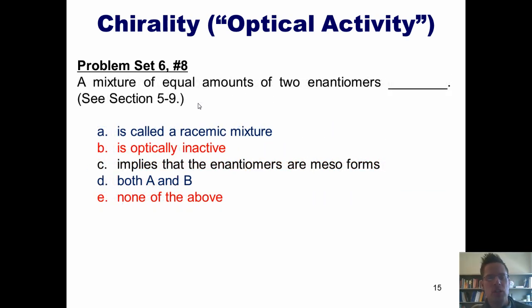Here's another one. A mixture of equal amounts of two enantiomers is what? A, it says, is called a racemic mixture. Is that true? Well, as we discussed earlier, the answer is yes.